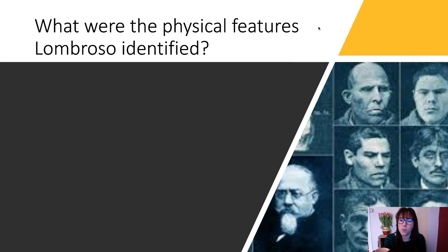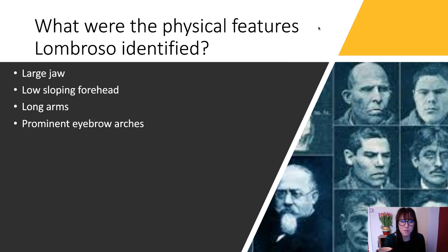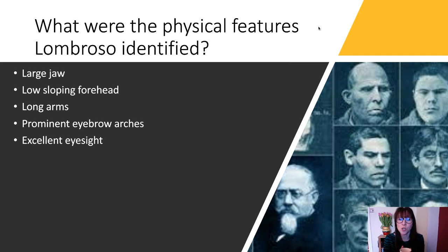The physical features Lombroso identified in criminals include: large jaws, low sloping foreheads, long arms, prominent eyebrow arches, and excellent eyesight. Those were the common features he found among criminals.